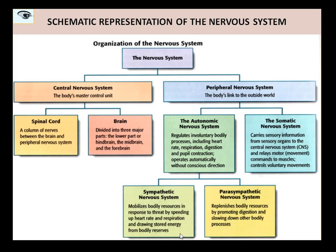The peripheral nervous system is divided into the somatic and into the autonomic nervous system. The autonomic nervous system is further divided into the sympathetic and the parasympathetic. What does the peripheral nervous system do? It actually provides information to the CNS, which is the central nervous system, from the sensory receptors — which are basically your eyes, ears, skin, etc. — and then further relays back the motor commands from the brain to the muscles and the glands.